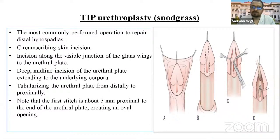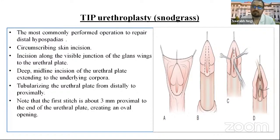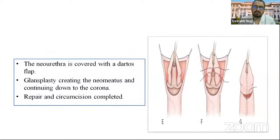TIP urethroplasty, also known as Snodgrass repair, is commonly performed for distal hypospadias. It involves a circumcising skin incision along the visible junction of the glans skin, followed by a deep midline incision of the urethral plate extending to the underlying corpora, and tubularization of the urethral plate from distally to proximally. The first stitch is about 3 mm proximal to the end of the urethral plate, creating an oval opening. The urethra is covered by the dartos flap, the neomeatus is created by glanuloplasty continuing down to the corona, and repair is completed with circumcision.